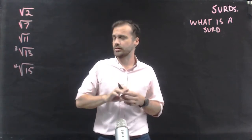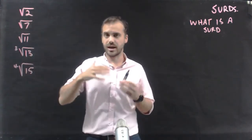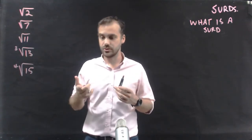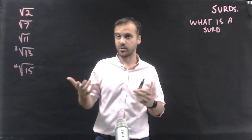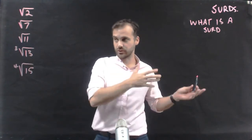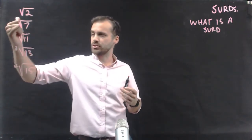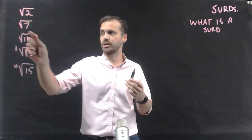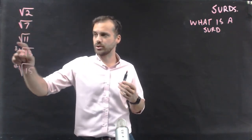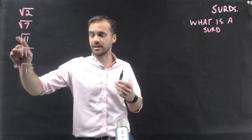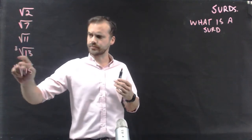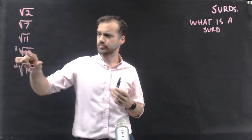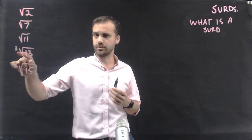Just a reminder: the square root of 2 is a number that, when multiplied by itself, gives 2. According to my calculator, it's 1.41 etc. — it goes on forever. The square root of 7 is the number multiplied by itself to make 7, and similarly for the square root of 11. The cube root of 13 is a number that is multiplied by itself three times to get 13.